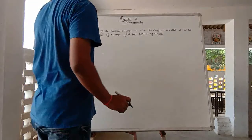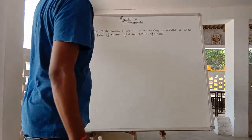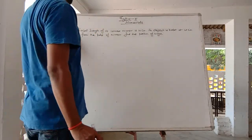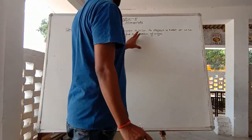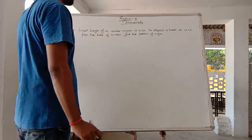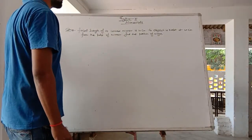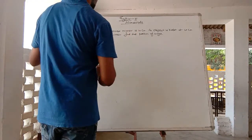Good morning students. Today I will start the numericals of reflection and refraction of light. The first numerical is: focal length of a convex mirror is 10 cm and an object is kept at 20 cm from the pole of mirror. Find the position of image. The focal length is 10 cm.